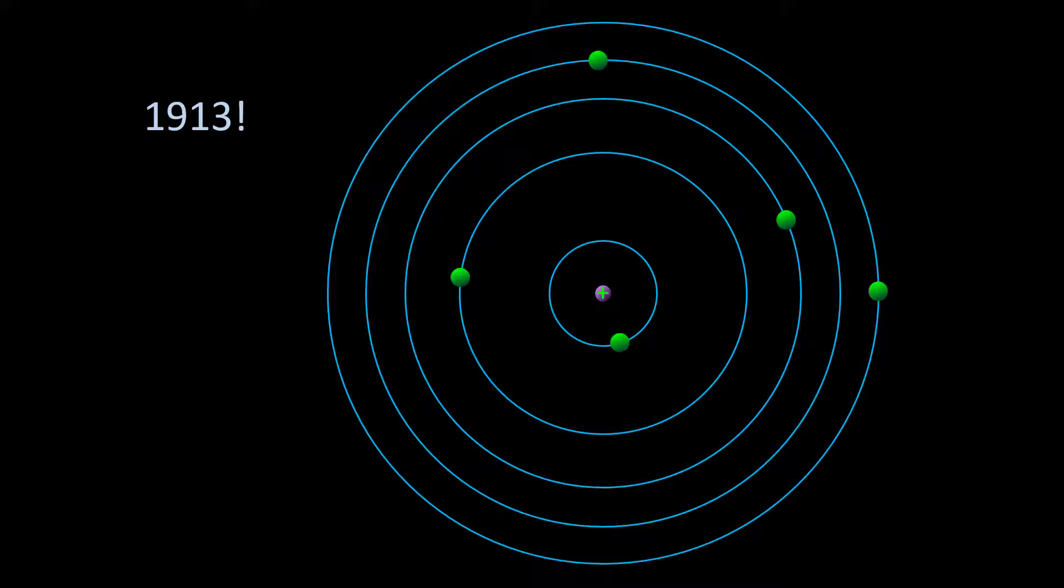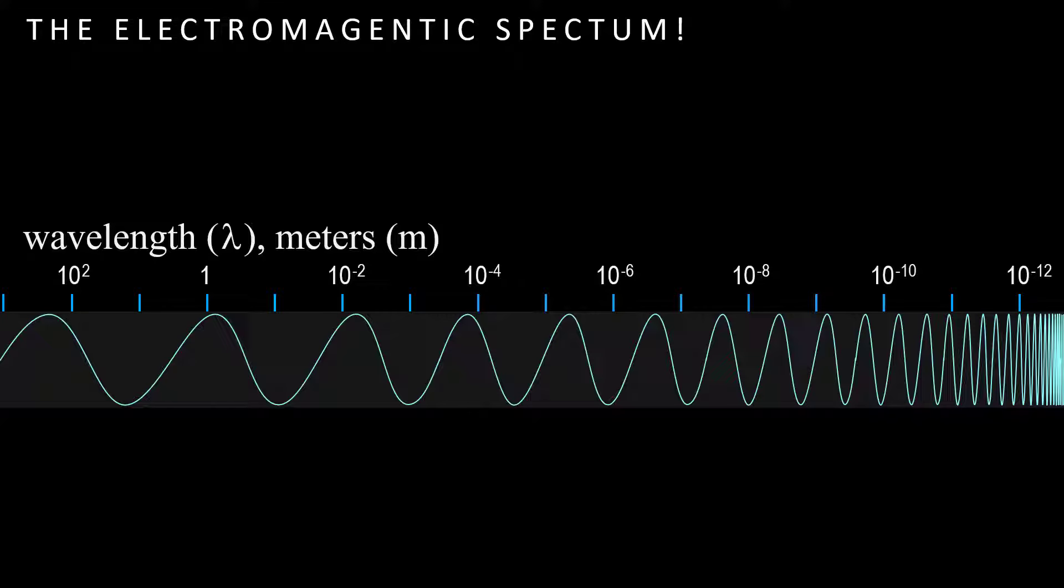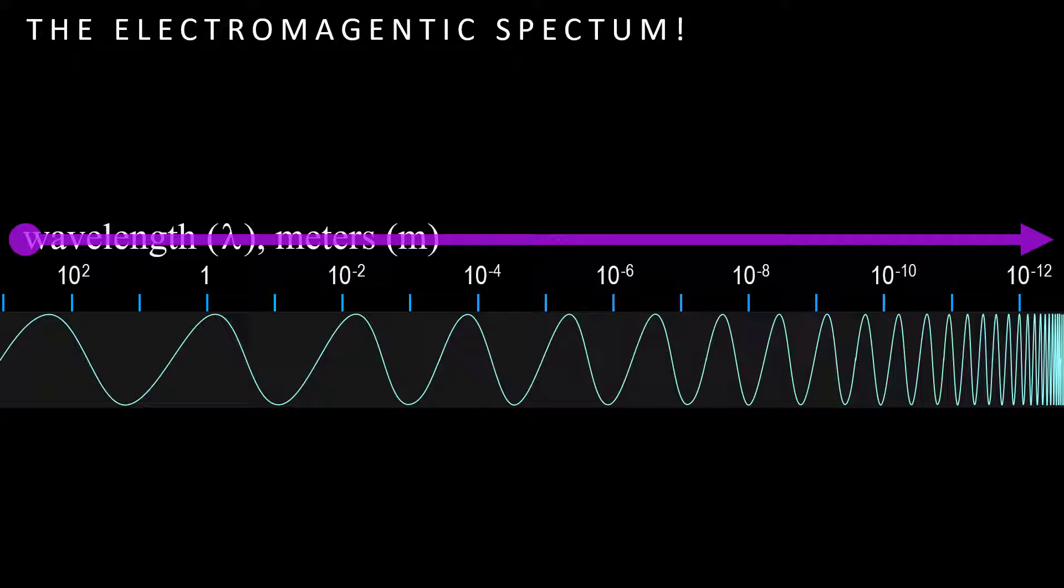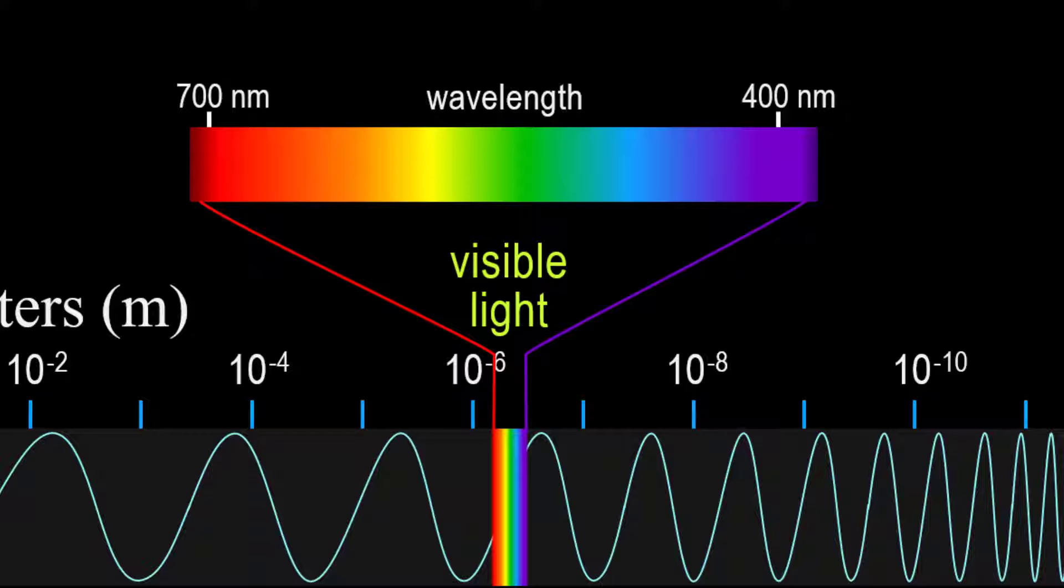First there is the electromagnetic spectrum. We can look at this spectrum as wavelengths of light that have a very wide range from greater than 100 meters to less than a trillionth of a meter. A narrow band within that range are light waves that our brains can detect through our eyes, and so this is the visible spectrum with each color corresponding to a different wavelength.